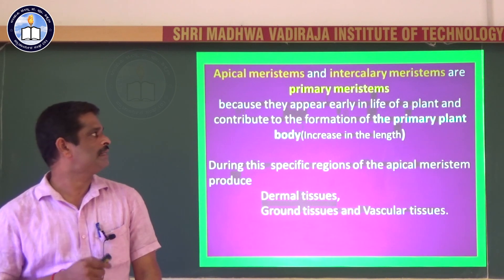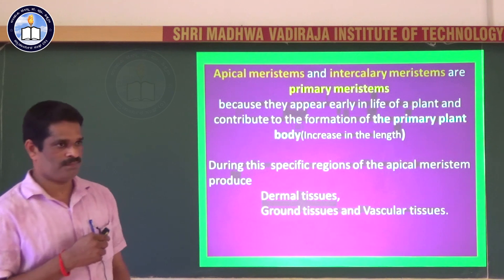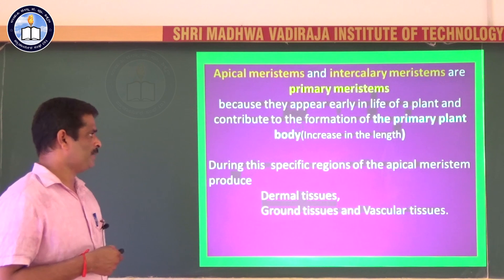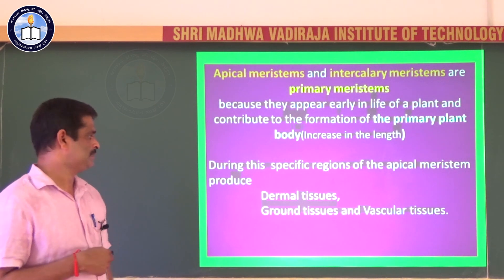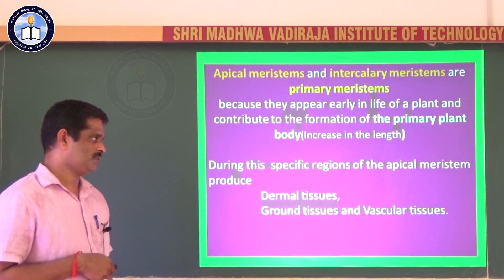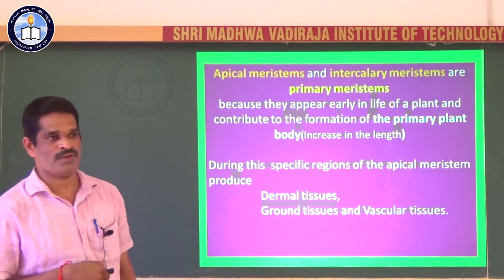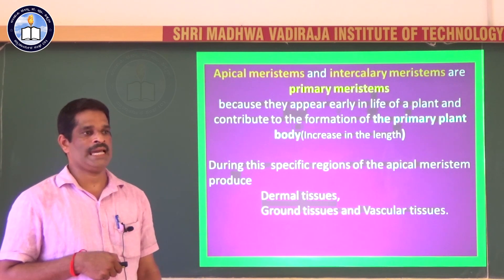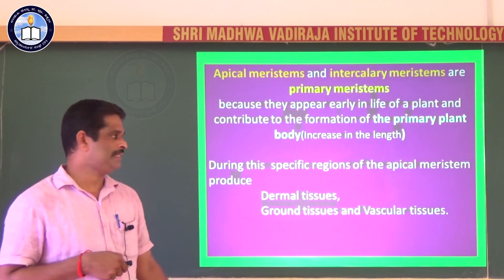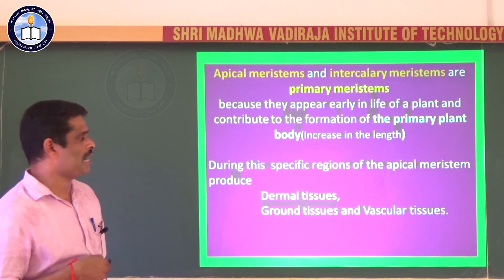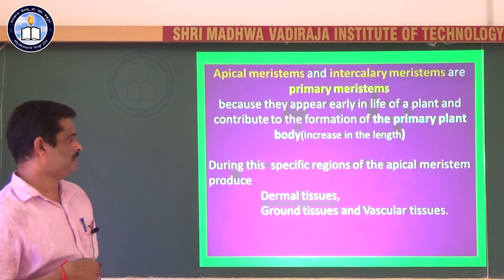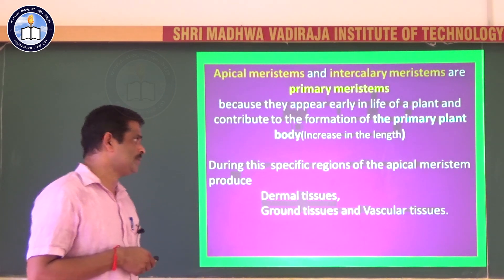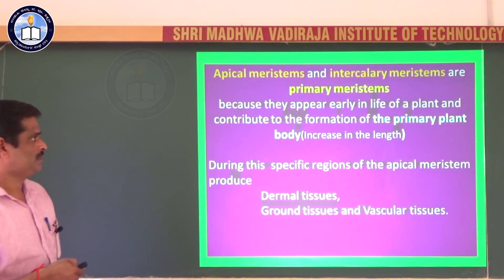The shoot apex produces three functional zones during formation of the primary plant body: dermal tissues, ground tissues, and vascular tissues. The root apical meristem produces four functional zones: initials for root cap (calyptrogen), initials for epidermis (protoderm), initials for cortex (ground meristem), and initials for the central cylinder (procambium). Thus four meristematic zones are observed in the root tip.